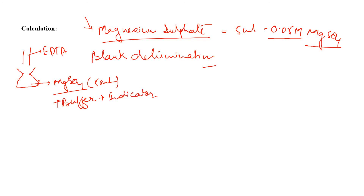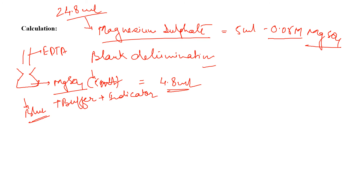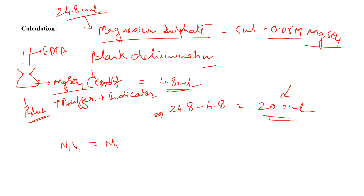Titrate the blank until the color converts from wine red to blue and note the end point. For example, if 5 mL of magnesium sulfate gives a blank reading of about 4.8 mL, and the previous titration with calcium carbonate gave 24.8 mL, then the final volume for the sample = 24.8 − 4.8 = 20 mL. This corrected volume is used for the final calculation to determine the normality of the EDTA solution, using N₁V₁ = N₂V₂.